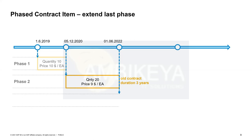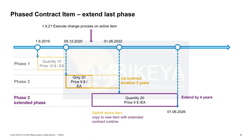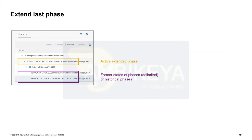The 'extend last phase' process is slightly different. Here you are already in the last contract phase and you essentially want to continue the contract, just adjusting the end date. Phase two is simply extended with a new end date while keeping all other parameters. This change process can only be used during the last phase. The purpose is that in future you can think about automatic extension of such contracts. The extend-last-phase process is simpler — your past phase one remains, and phase two is replaced by a new one with a new date.